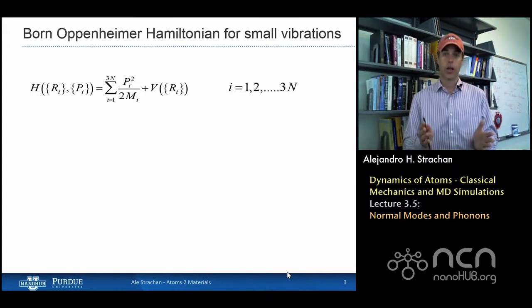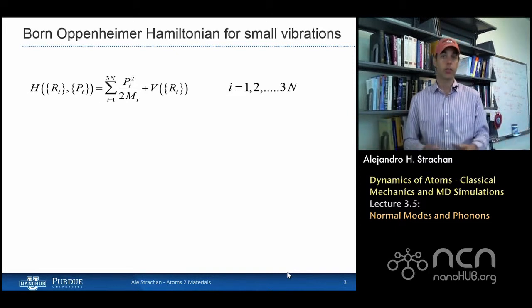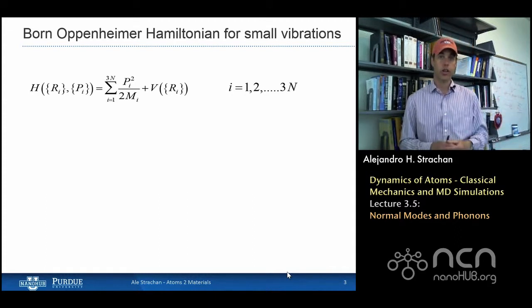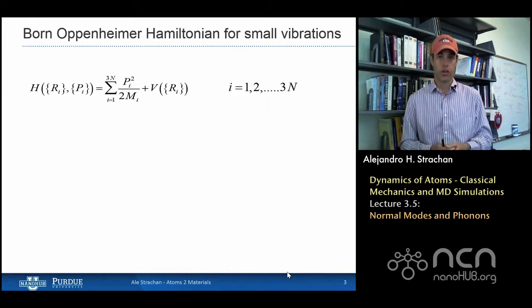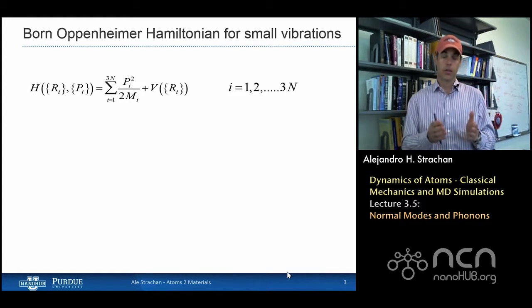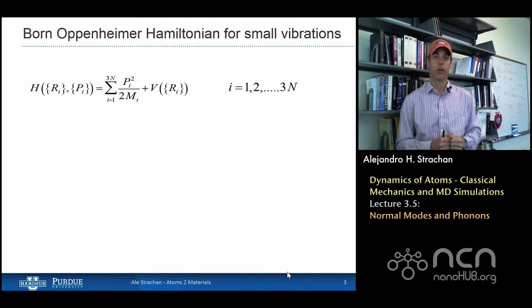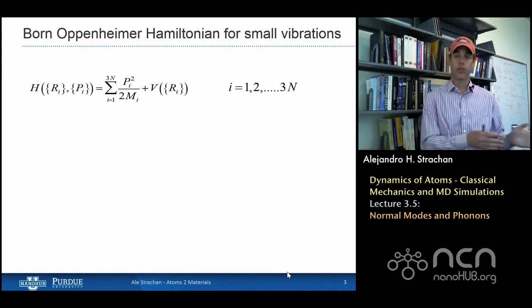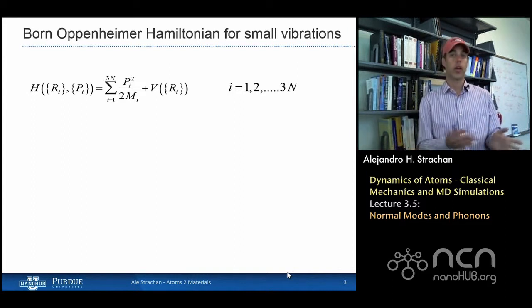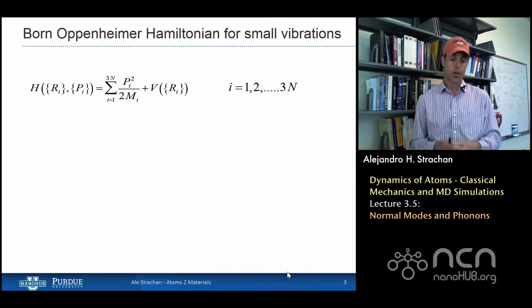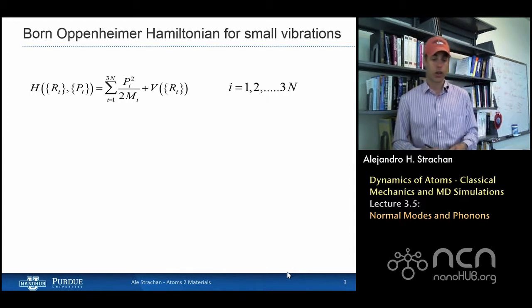We're going to start with the Hamiltonian of a set of n atoms in three dimensions. I have three n momenta and three n positions — x, y, z for each atom. The Hamiltonian has a kinetic energy term written in terms of the momentum and a potential energy term, which is a description of the potential energy as a function of the atomic positions. As we saw in the last few lectures, these are complex functional forms, and they depend on what type of material I'm describing. The potential energy can also be the result of an electronic structure calculation.